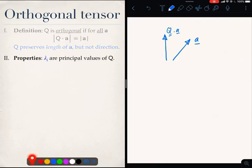Here are some properties of an orthogonal tensor. Let us for the moment say that given an orthogonal tensor, let its principal values be lambda i. Remember, principal values are the same as eigenvalues. So the first property is that the inverse of an orthogonal tensor is simply its transpose. Let me quickly prove this for you.